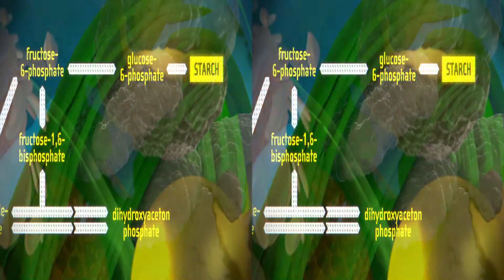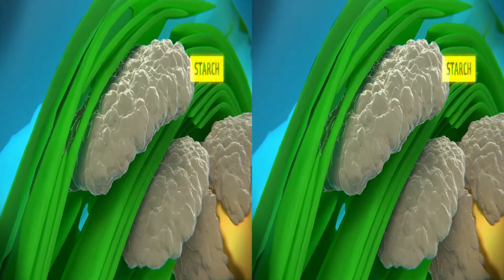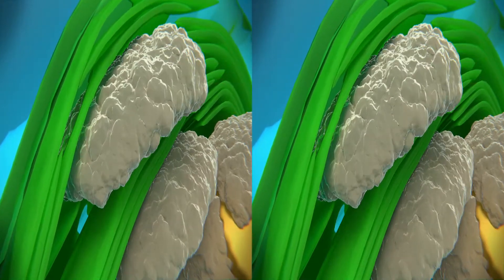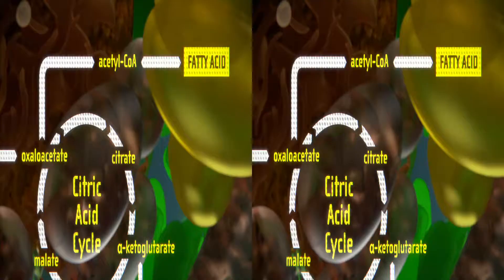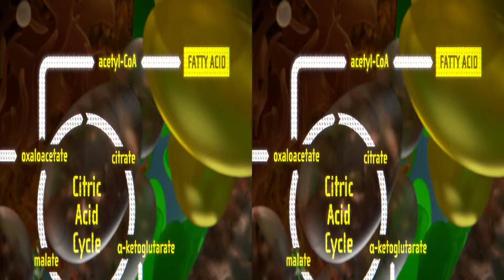Finally, it can also be stored in the form of starch by way of gluconeogenesis and neutral lipids, again via acetyl coenzyme A and lipid biosynthesis pathways.